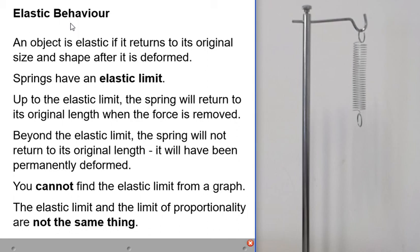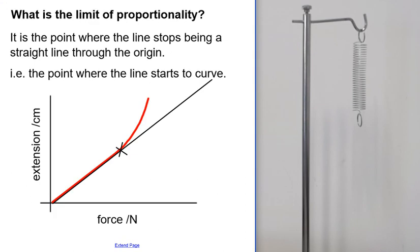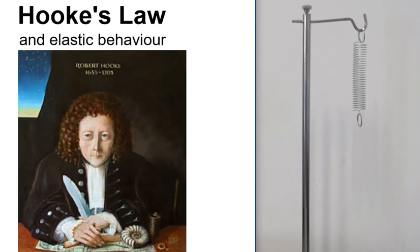The elastic limit and the limit of proportionality are not the same thing — try not to confuse them. The limit of proportionality is when the line stops being a straight line through the origin. For a spring, the elastic limit is usually further along — the spring stops being proportional but still remains elastic for a while, and then stops being elastic a little bit further on. So those are Hook's Law and elastic behavior: two separate ideas.